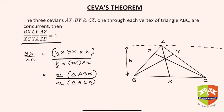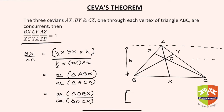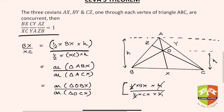Let the point of concurrence be O. The same ratio BX/XC can also be written as the area of triangle OBX divided by the area of triangle OCX, because if the height from O is h1, then OBX = ½ × BX × h1 and OCX = ½ × CX × h1, so h1 and the halves cancel.